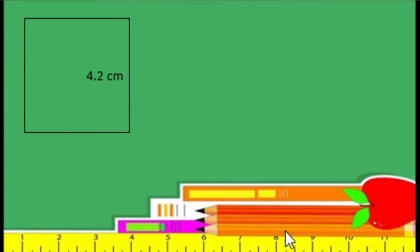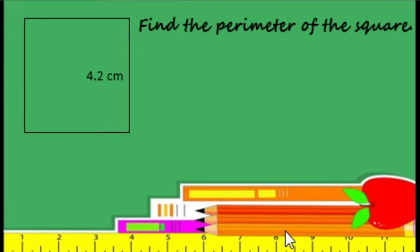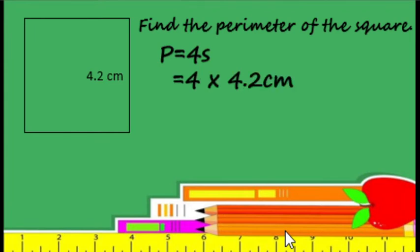Look at the square with one side measuring 4.2 centimeters. Let's find the perimeter of the square. So first step, we are going to write the formula. The formula is: perimeter equals 4 times the side. So that is 4 times 4.2 centimeters.